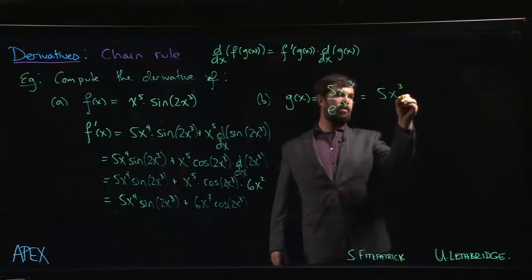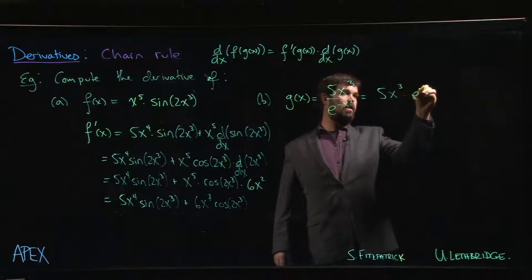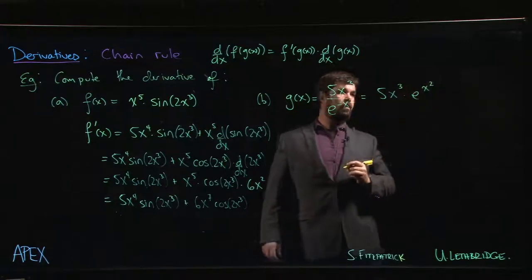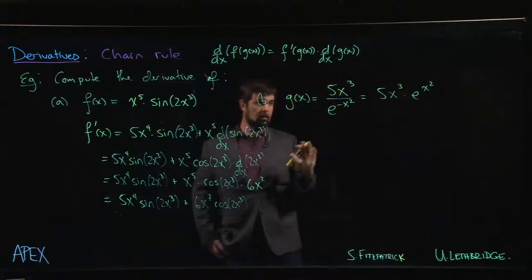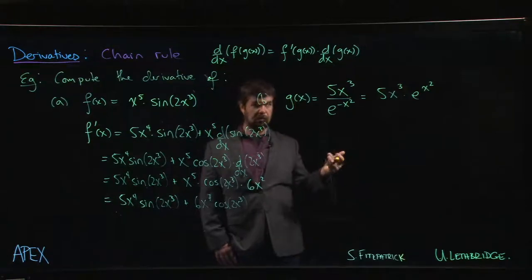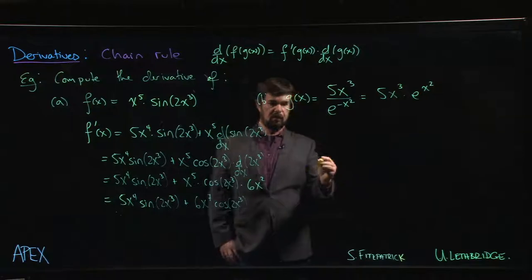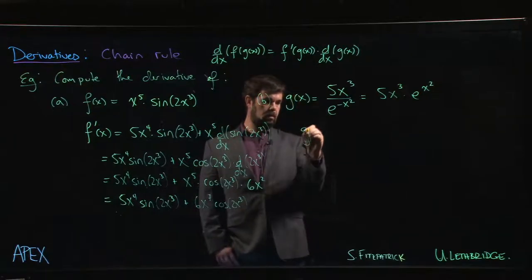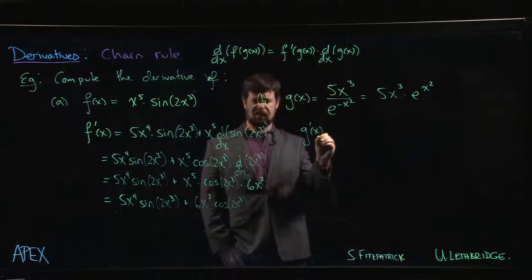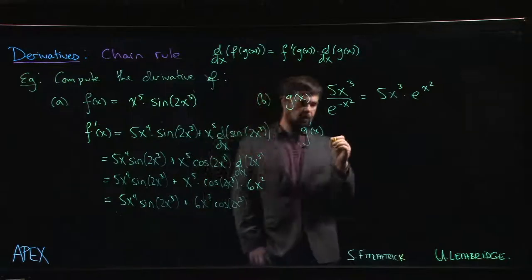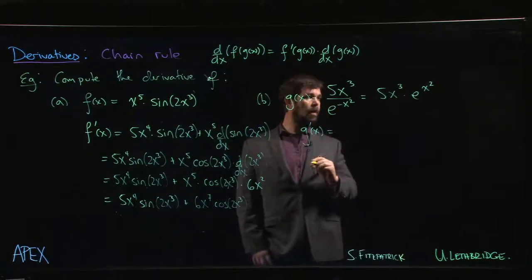So I can write this as 5x cubed times e to the plus x squared. Those are equivalent through the laws of exponents. Now, rather than using quotient rule, I only have to use product rule. And product rule is always nicer than quotient rule when you can use it.